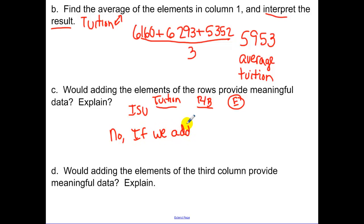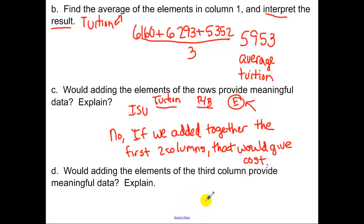If we added together the first two columns, that would help us tell how much we're going to have to pay. Would give us cost. Adding enrollment wouldn't help. If we added enrollment, that wouldn't help us out at all.